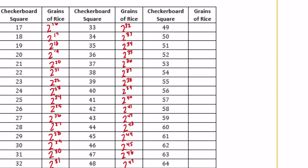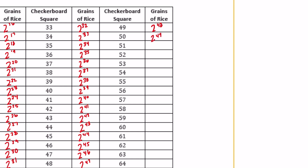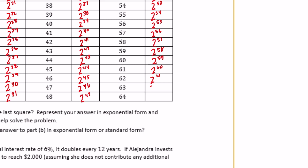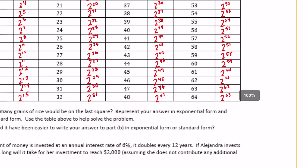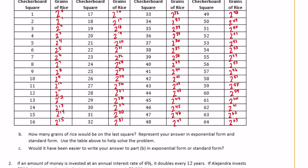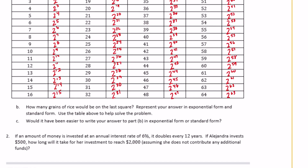The last column starts with two to the 48th power and we go all the way down to two to the 63rd power — that's how we filled in the chart. For part b, how many grains of rice would be on the last square? The last square is the 64th square, which is two to the 63rd power.